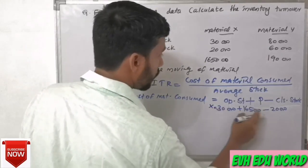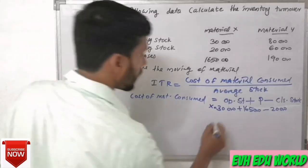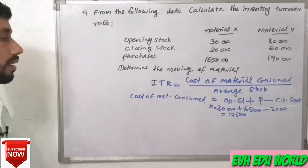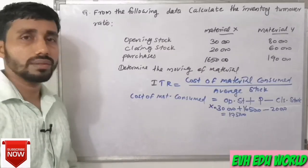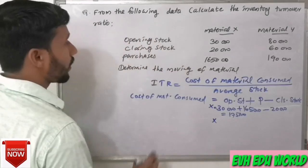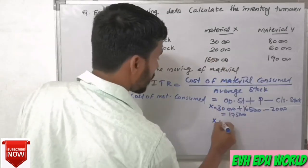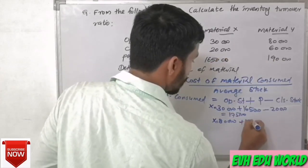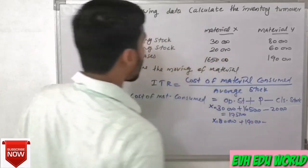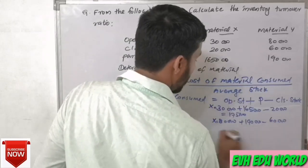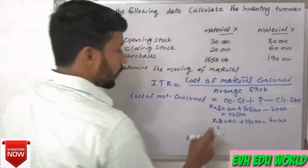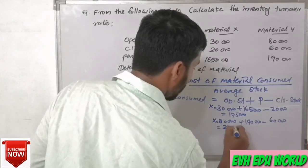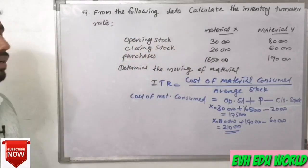For Material X: 1,95,000 minus 20,000 equals 1,75,000. That is the cost of material consumed for X. For Material Y: opening stock is 80,000, plus purchases 1,90,000, minus closing stock 60,000. That gives 2,70,000 minus 60,000, which is the material consumption for Y.